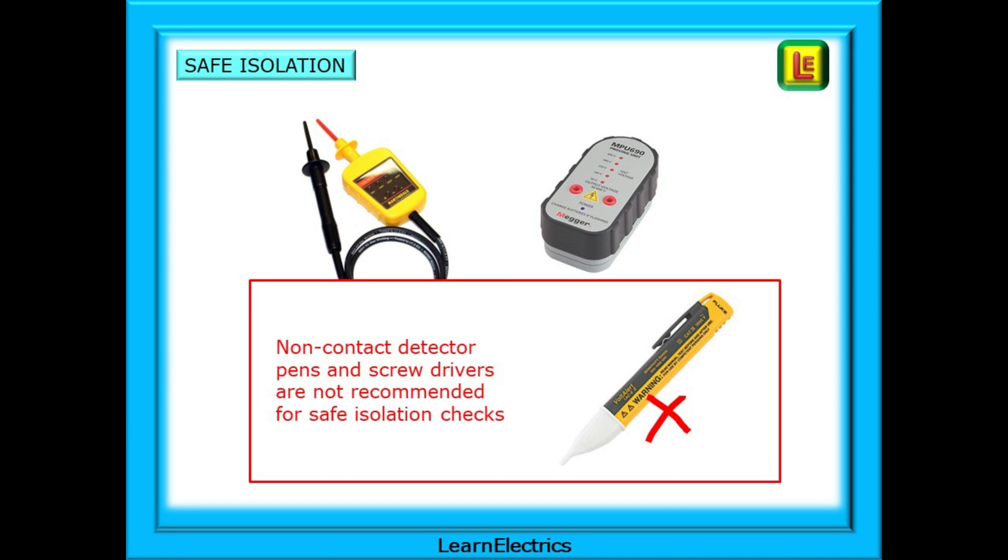Safe isolation, testing for dead, must be taken seriously. The wrong test equipment can put you or your colleagues in danger. One common device that many tradespeople think will prove a circuit is safe is the voltage detector pen. These non-contact detector pens and the voltage detector screwdrivers are not recommended for safe isolation checks. They will not always show when a voltage is present.